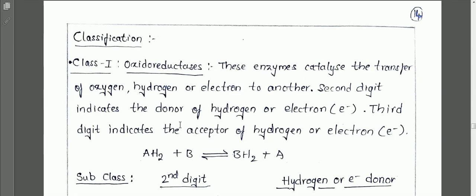Oxidoreductases are enzymes which catalyze the transfer of oxygen, hydrogen, or an electron to another component. Any enzyme which catalyzes oxidation-reduction reactions is called an oxidoreductase, and these are classified in the first class of enzyme classification.